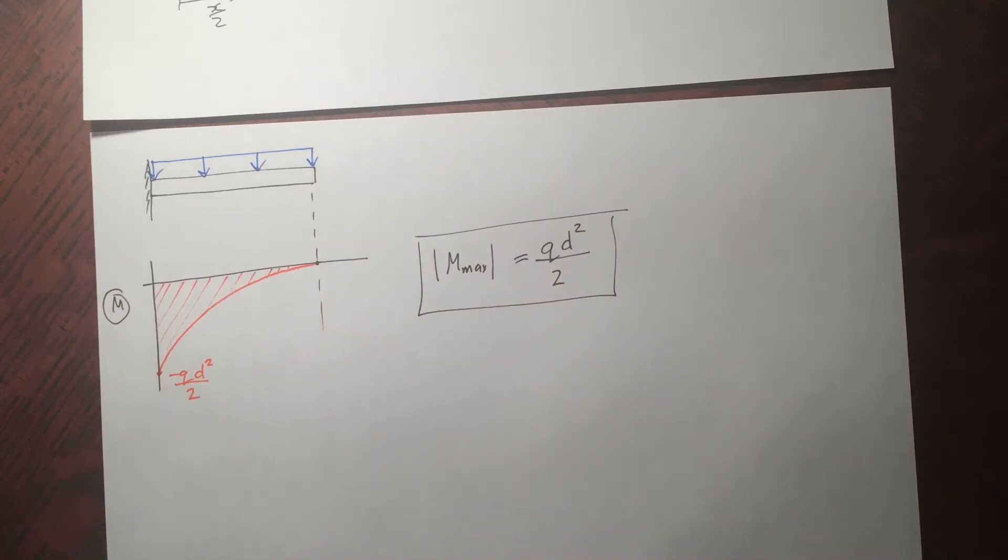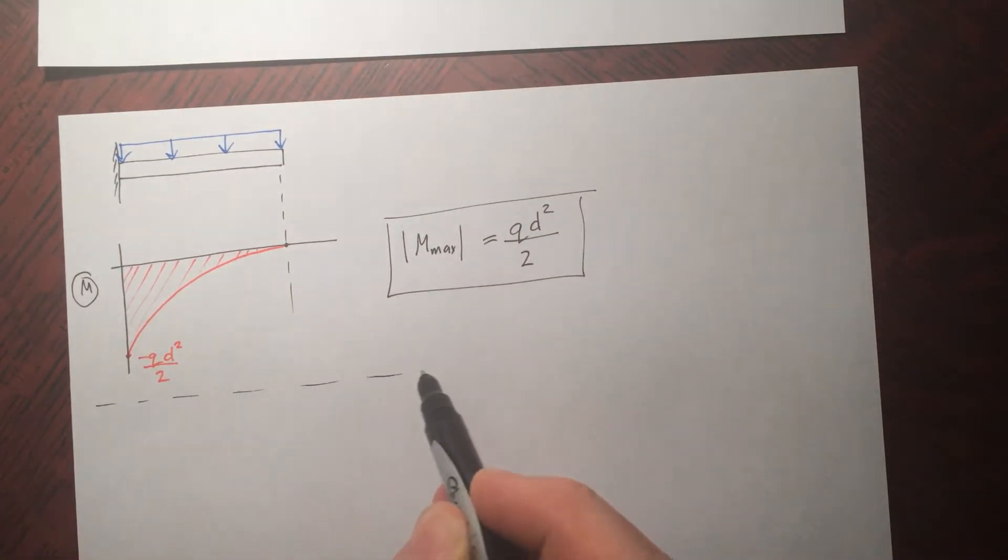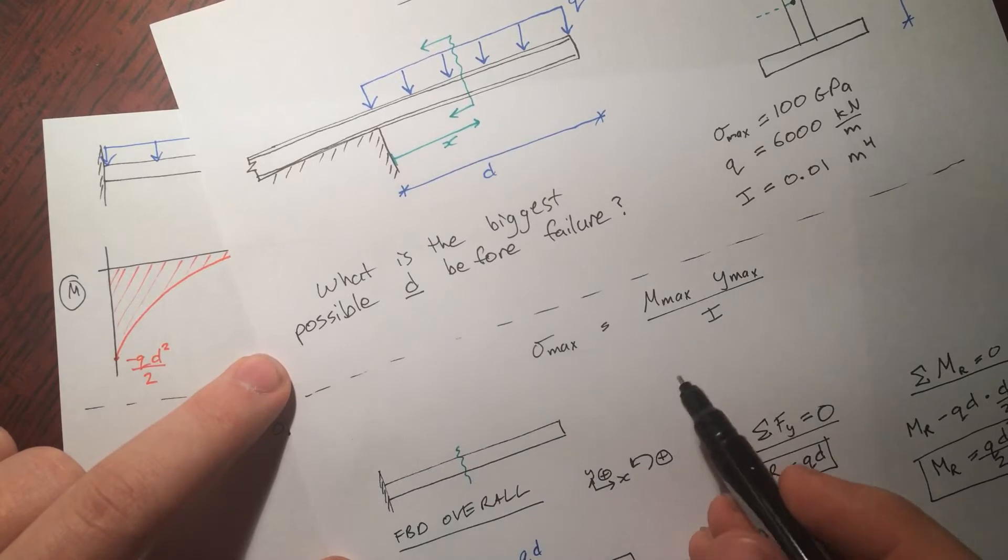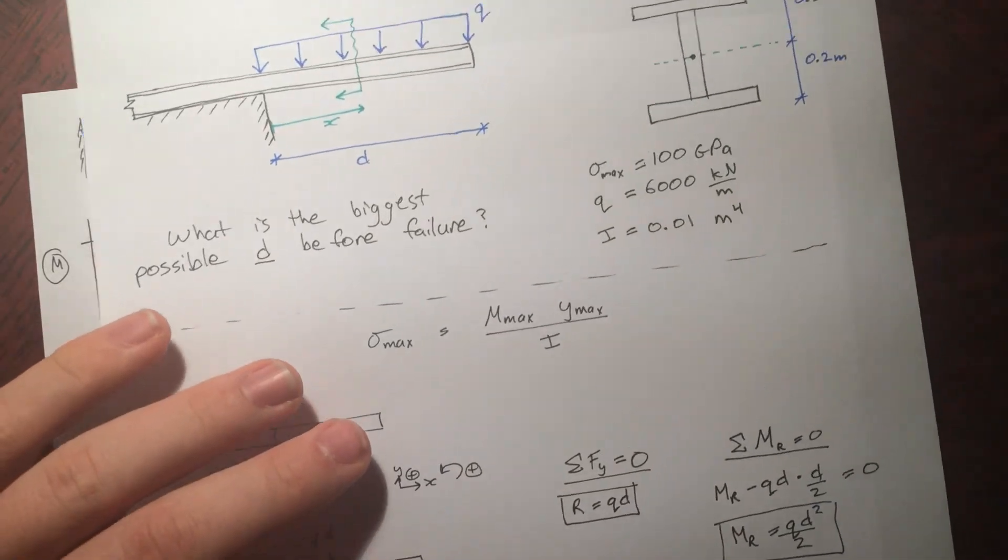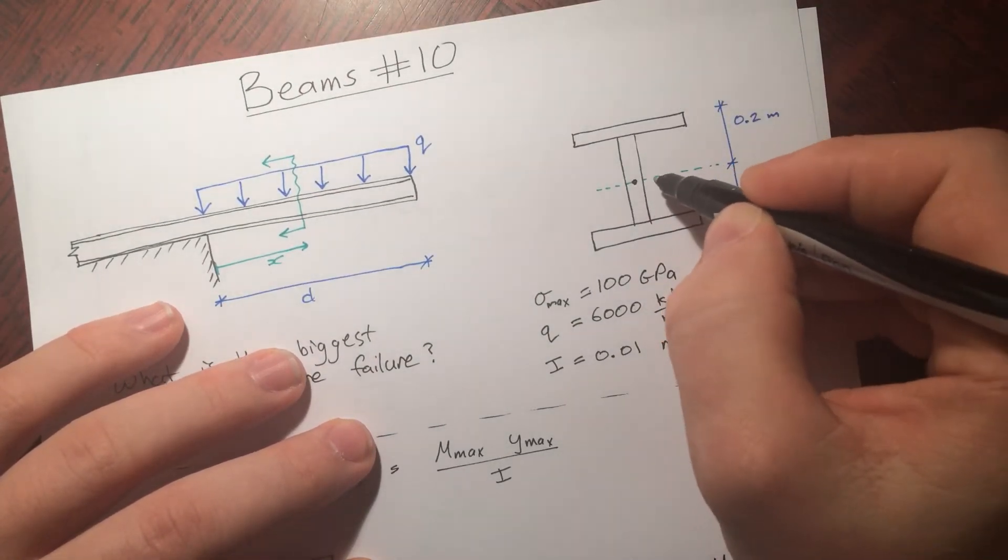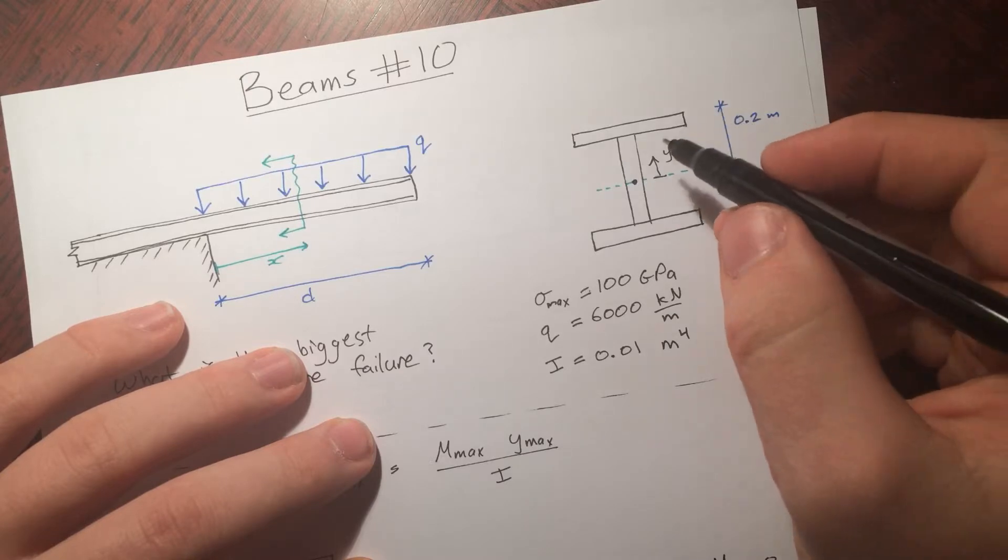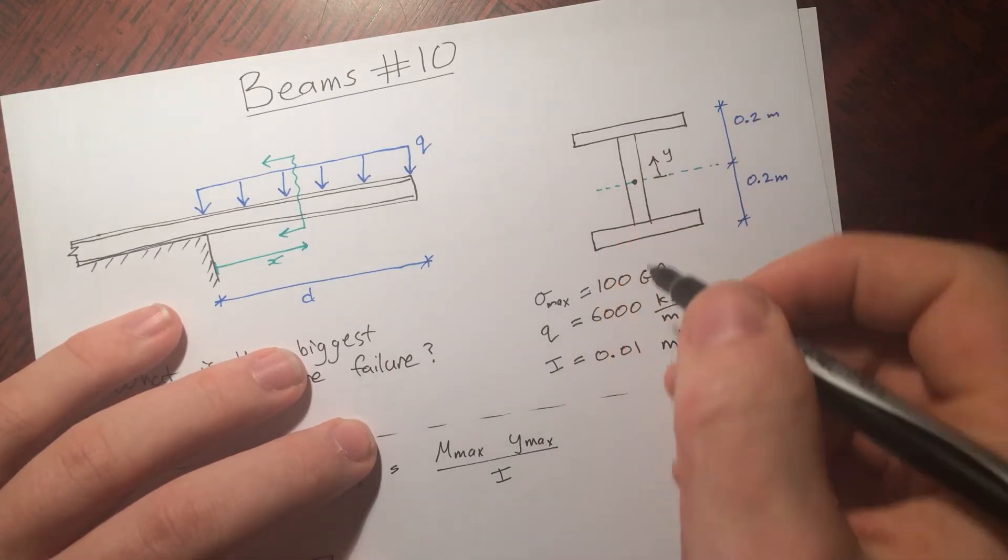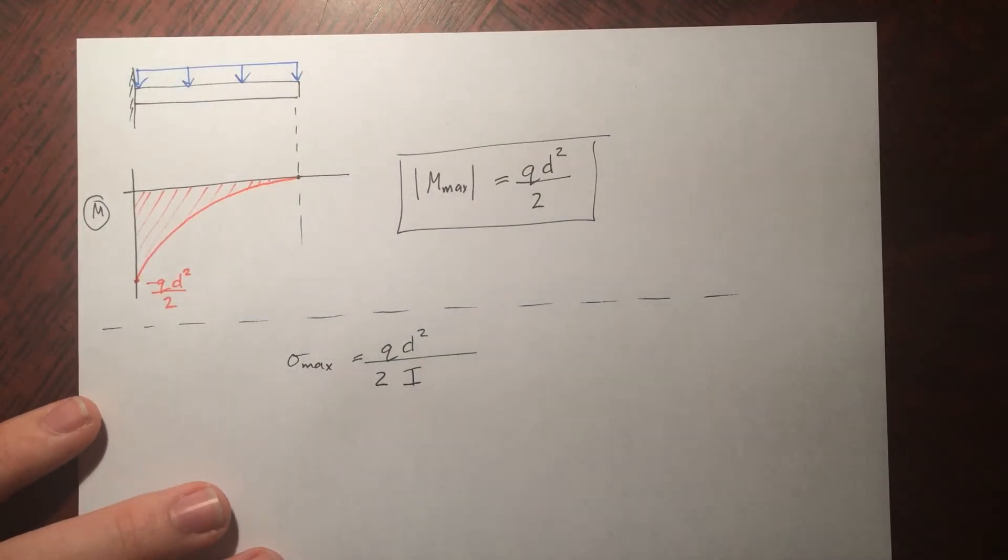So now we can go back to our original equation that we needed to solve, this one right here, and plug in what we know, what we still need to know. M max, so it's qd squared by 2. Now we still have y max over I. So I is given to us, and y maximum, well that's going to be 0.2. So y is measured from here, from the neutral axes of the section. And then it could either be 0.2 up here, 0.2 down there, negative 0.2, positive 0.2. But because it's symmetrical, it doesn't matter which one you choose. So like I've been doing so far, I'm just going to ignore the plus or minus sign and just use magnitude.